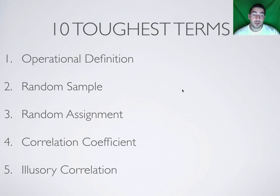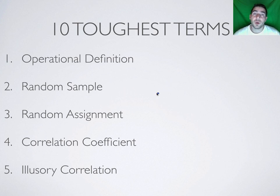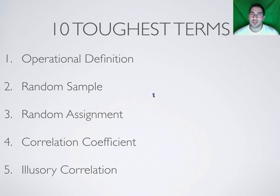Continuing with correlation, we move to number five: the illusory correlation. This is where people think a correlation exists where there isn't one. For example, watching a football game and thinking wearing your favorite jersey has affected your team's success or failure. Another example: one day you don't stretch before a run and you have a really good run, so you think not stretching makes you faster — that's an illusory correlation, because research shows stretching and warming up properly increases performance. An illusory correlation is when we get caught up and think a relationship exists where one doesn't.